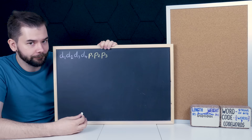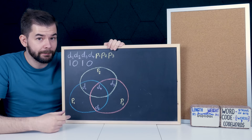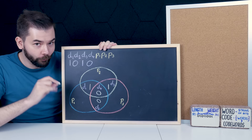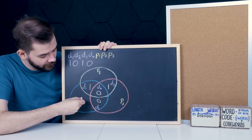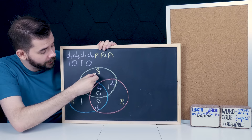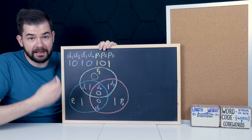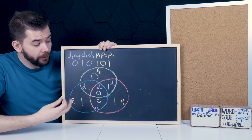This diagram shows the relationship between the information digits and the check digits. So we start by putting the information digits in, and then we follow this rule to produce the check digits. The rule is that every circle must contain an even number of ones. So P1's circle currently contains an odd number of ones, so we need a one in there to make it even. P2's circle is currently fine as it is, so we make this one zero. And P3's also has an odd number of ones, so we need a one in there to make it even. So we have P1 is one, P2 is zero, P3 is one. And that is the Hamming code word that corresponds to encoding the information 1010.